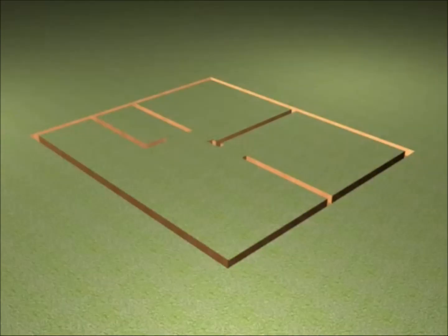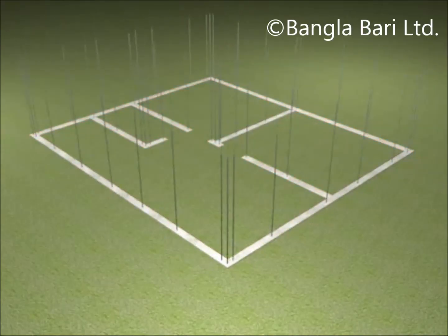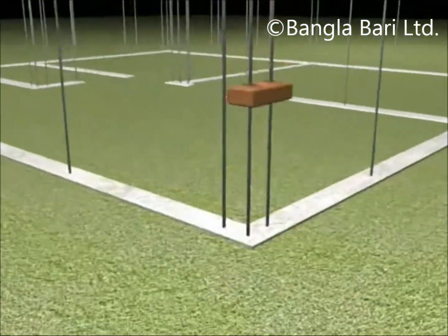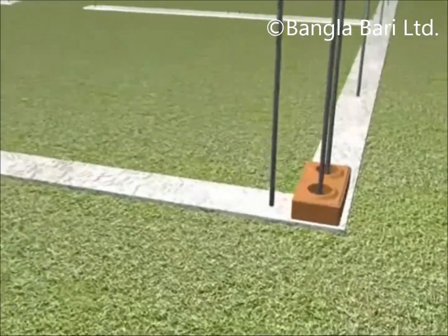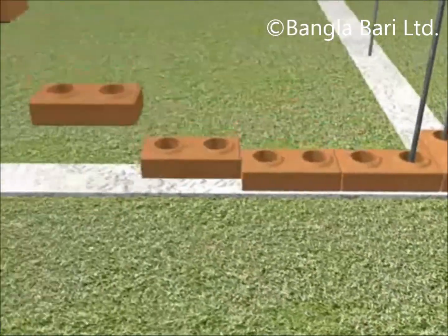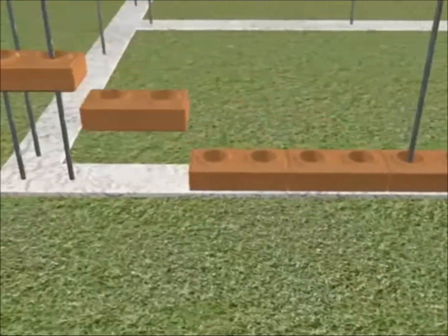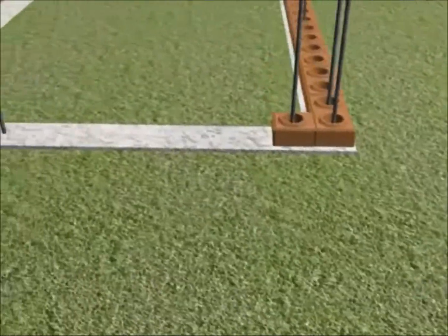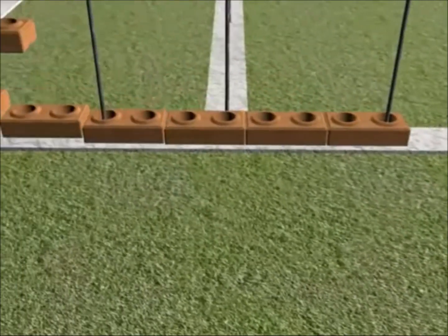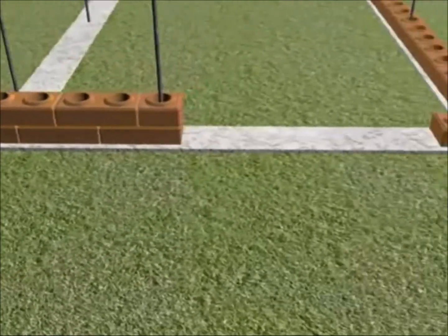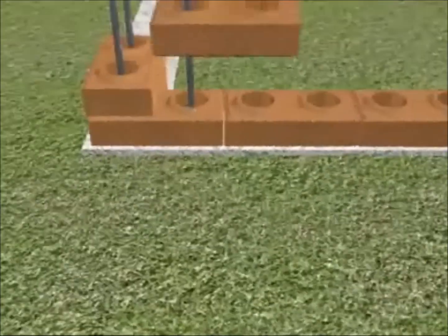that you build using earth and cement. First, we pour in the concrete and join the rods, then put the compressor blocks on the base. As you can see, these compressor blocks have holes in them and are interlocking blocks, so they actually joint with each other.